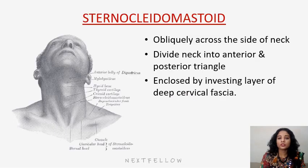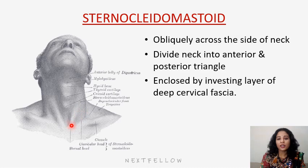The sternocleidomastoid is present obliquely in the neck and divides the neck into anterior triangle and posterior triangle. It is enclosed by the deep cervical fascia. Here we can see the impression of the sternocleidomastoid muscle.